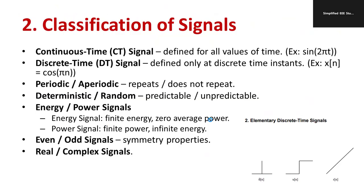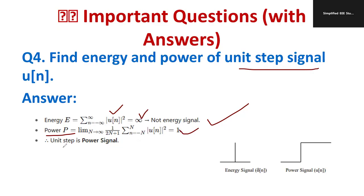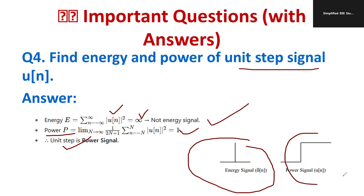To find the energy and power of the unit step signal u(n): Energy = Σ |u(n)|² from -∞ to ∞ = ∞, so it is not an energy signal. For power: limit as N→∞ of (1/(2N+1)) · Σ |u(n)|² from -N to N = 1/2. Since the power is finite and non-zero, the unit step signal is a power signal.